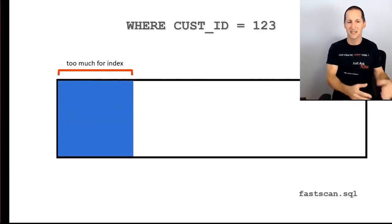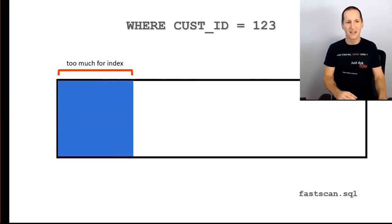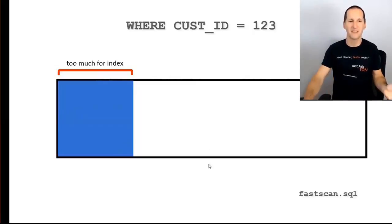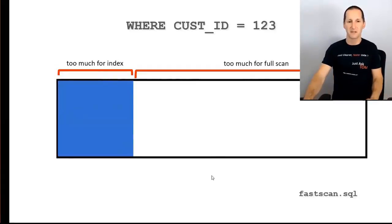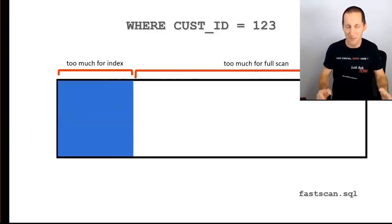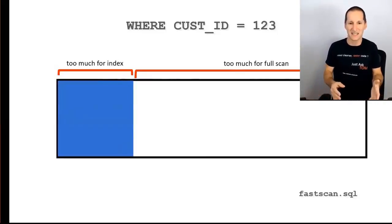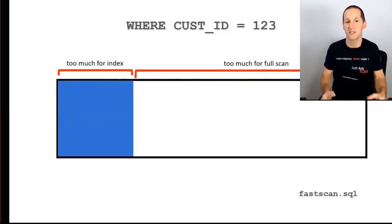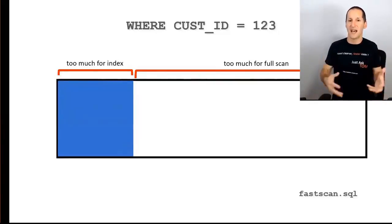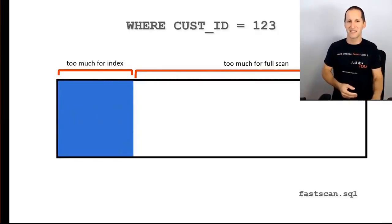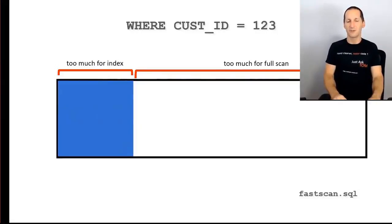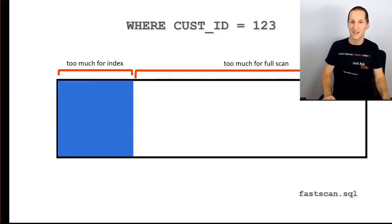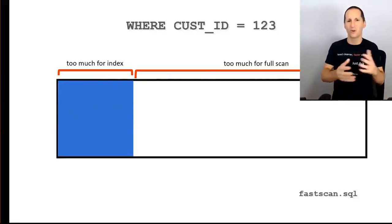How do we solve that? We're in an awkward situation: it's too much data to access with an index — scanning 20% of all blocks with an index on customer ID is probably going to be slower than a full table scan. But it's too big for a full table scan too; it doesn't meet business requirements because the query is taking too long. Someone says put an index on it — there is one already and it makes it slower. Do a full table scan — that's too slow. What are the options to tackle these awkward boundary cases?